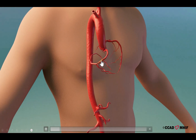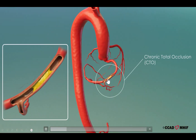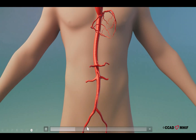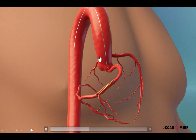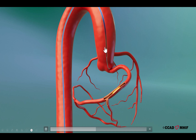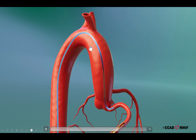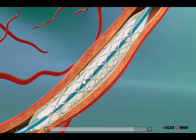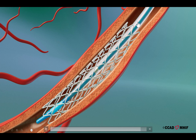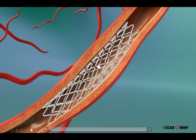Question number six: how is CTO percutaneous coronary intervention, or CTO PCI, actually done? This is a patient who has a chronic total occlusion on the right coronary artery. To open the CTO using stents, we go through two arteries — either two arteries in the leg or one leg and one arm — and advance a small wire and catheter all the way into the blocked artery. We first insert a guide wire through the blockage, then advance balloons and stents. The stents are loaded on balloons and placed across the area of the blockage. The balloon is inflated, which expands the stent, then the balloon is deflated and removed, leaving the stent in place to allow blood to flow through the previously blocked artery.